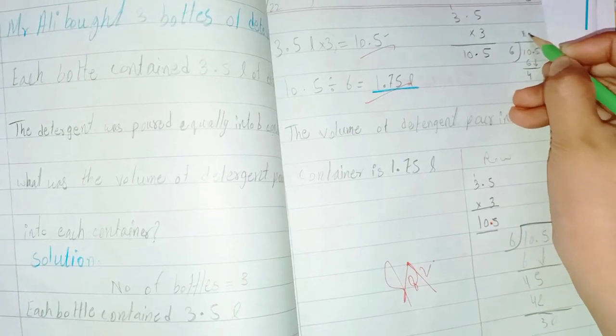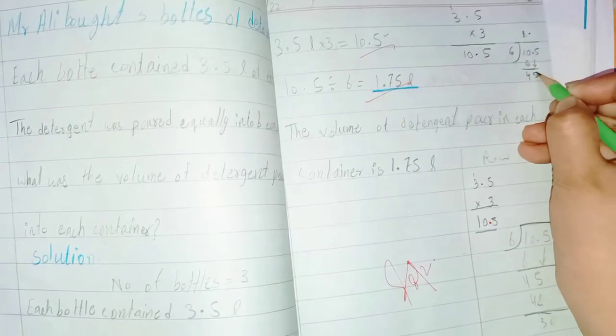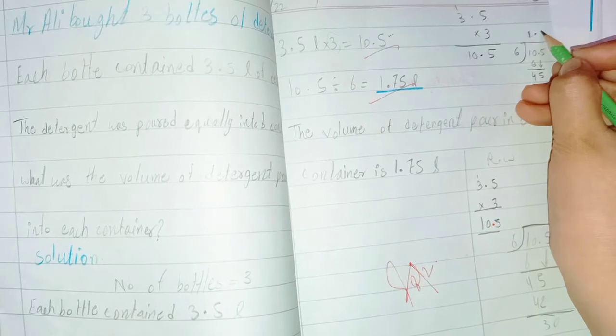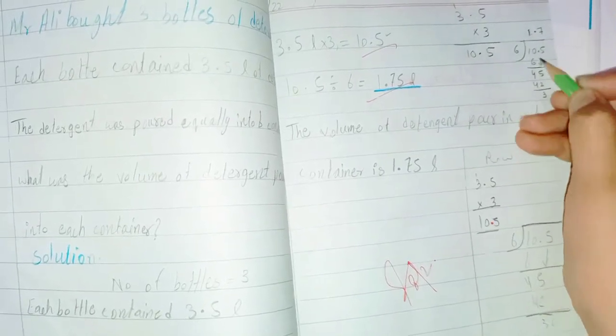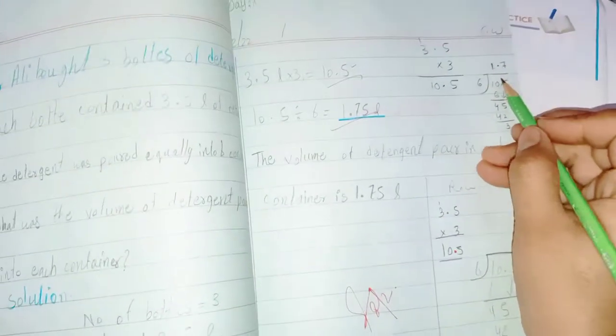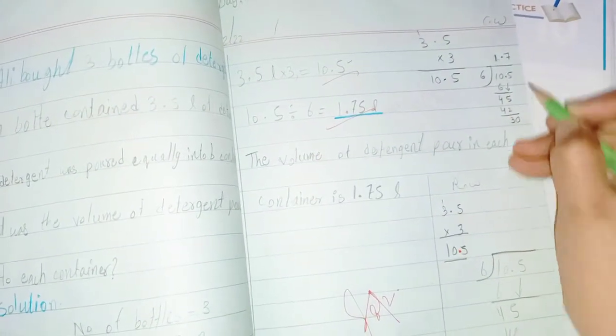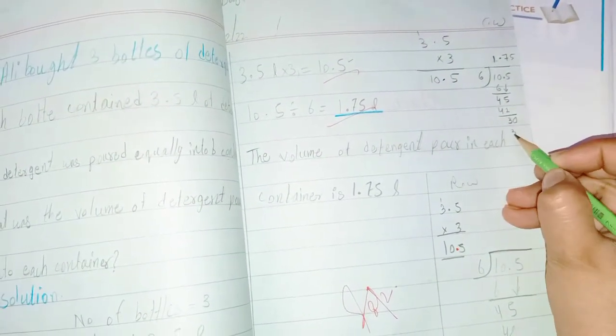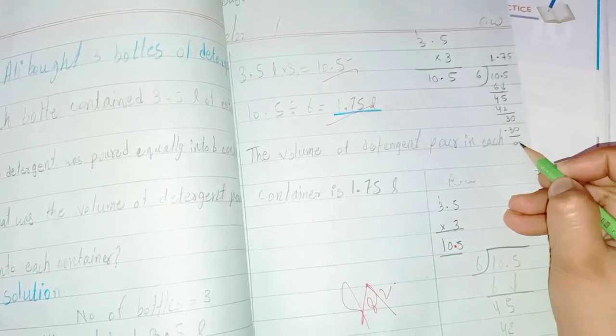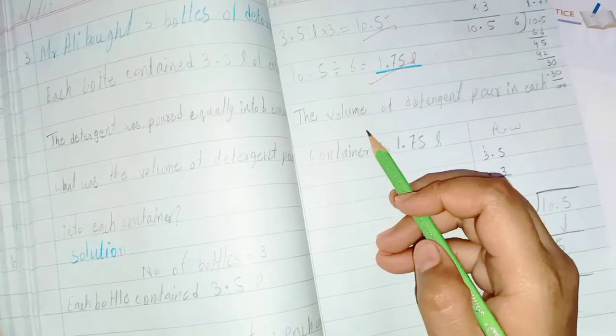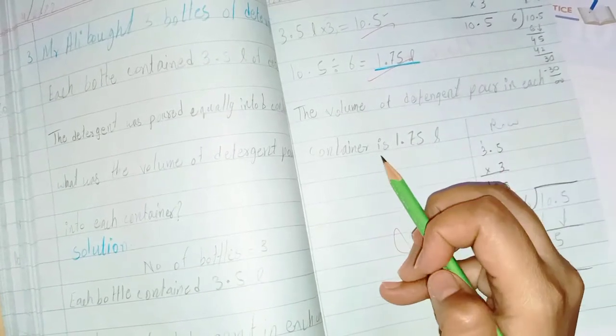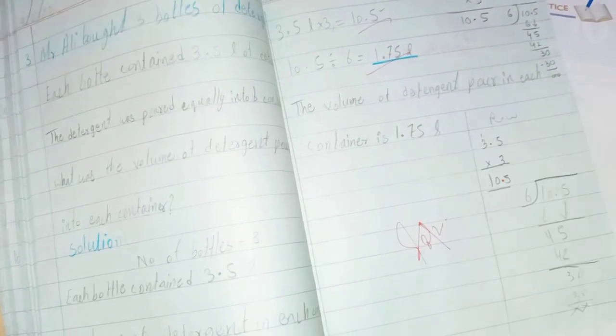Now 45: 6 times 7 is 42, 3 remaining. After having the decimal point, we can take the 0 here. 30: 6 times 5 is 30. So the answer is 1.75. This means the volume of detergent poured into each container is 1.75 liters.